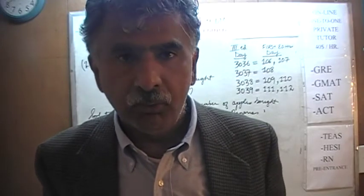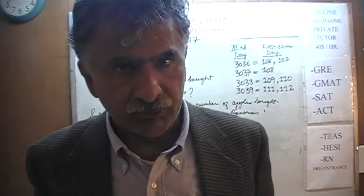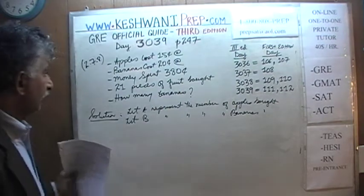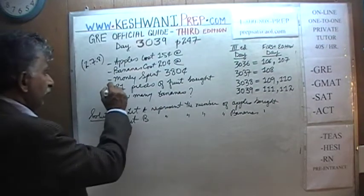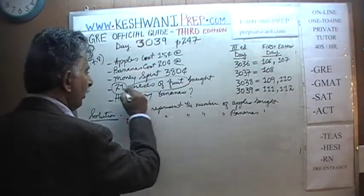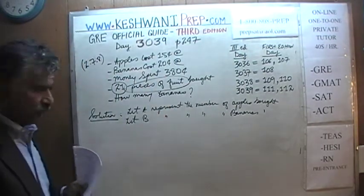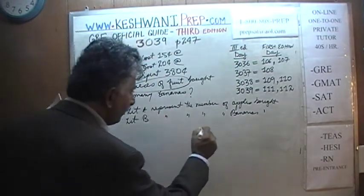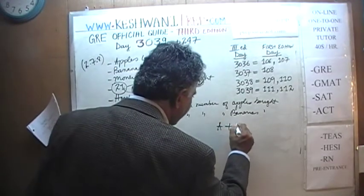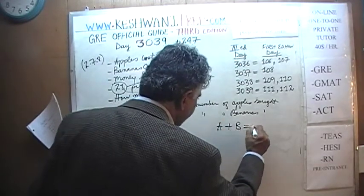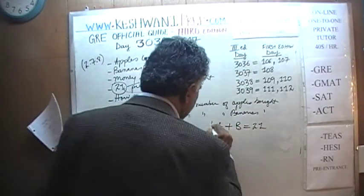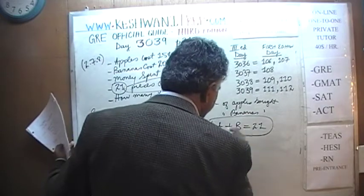Let A represent the number of apples bought, and let B represent the number of bananas bought. The first equation — which we'll call equation 2 — is straightforward: the number of apples plus the number of bananas equals 21, since we bought 21 pieces of fruit total.